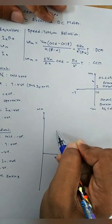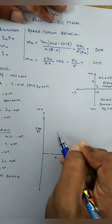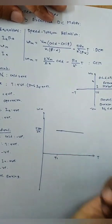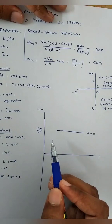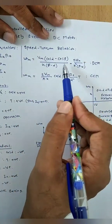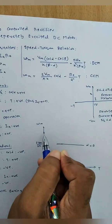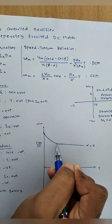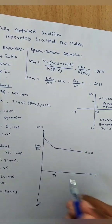For alpha = 0, the equation becomes ω_M = 2V_M/(π·K) − (R_a/K²)·T, which is a straight-line equation. The intercept is 2V_M/(π·K) and the slope is R_a/K². This curve for alpha = 0 is in the CCM region, and below the boundary it transitions to DCM operation.